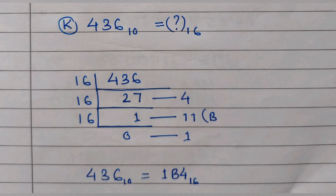For question K, we have to convert a decimal number into hexadecimal. We divide the number by 16. When we divide 436 by 16 we get 27 with remainder 4. Then we divide 27 by 16 and get 1 with remainder 11. Since 11 in hexadecimal is B — as we know 10 is A, 11 is B, 12 is C and so on — writing the remainders from bottom to top gives the final answer 1B4 with base 16.